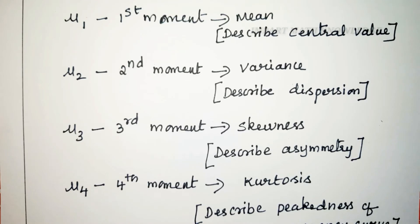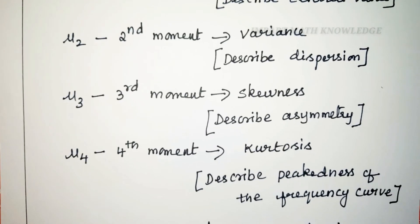Mu1, the first moment, describes the central value — it is the mean. Mu2, the second moment, is variance — it describes the dispersion. Mu3, the third moment, is skewness — it describes the asymmetry of the distribution. Mu4, the fourth moment, is kurtosis — it describes the peakedness of the frequency curve of a distribution.